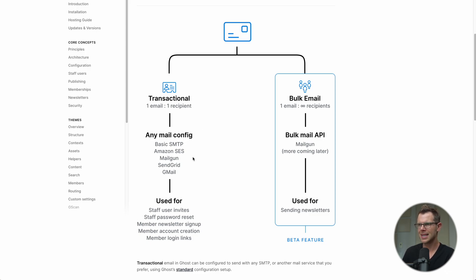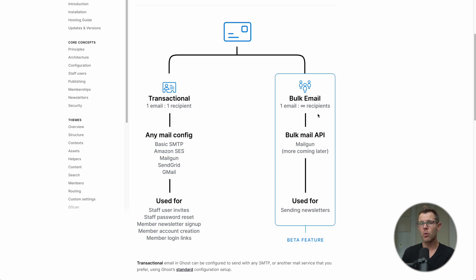With Ghost you can use any email provider — popular examples include Amazon SES, Mailgun, SendGrid, and Gmail. Other examples of transactional emails are staff user invites, member newsletter signups, member account creation, and login links. Ghost can also send bulk email, where one email goes to many recipients at once — the most obvious example being email newsletters.